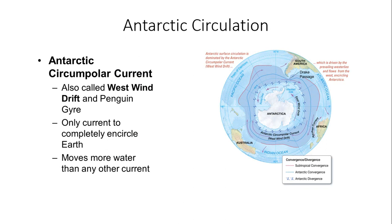The Antarctic Circumpolar Current, also known as the West Wind Drift and sometimes the penguin gyre, is the only current in the world to completely encircle the Earth. There are no land masses in the way of this particular current, and it moves more water than any other current. It moves from west to east and can generate some of the stronger winds, sometimes known as the Roaring Forties, around 40 degrees south latitude towards Antarctica, where there's no land mass to slow wind speeds down.